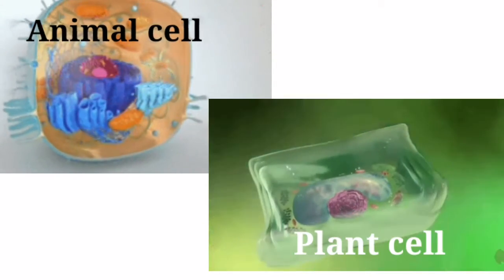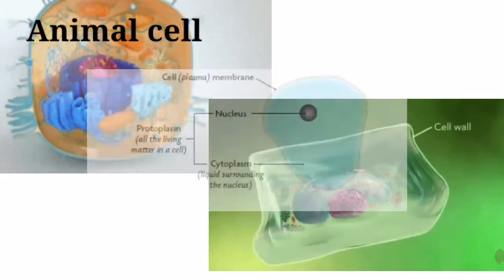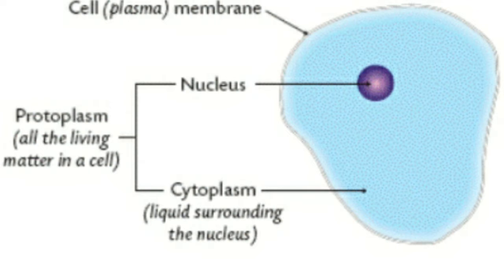There are two types of cells: plant cell and animal cell. The cell is made up of three parts: plasma membrane or cell membrane, nucleus, and cytoplasm.